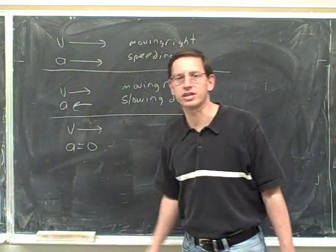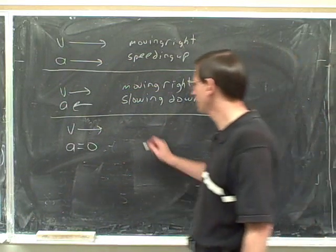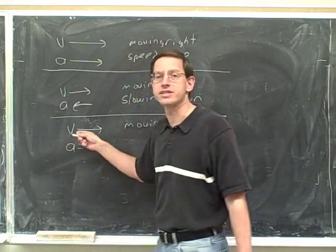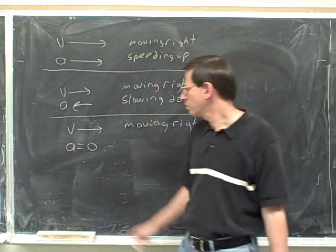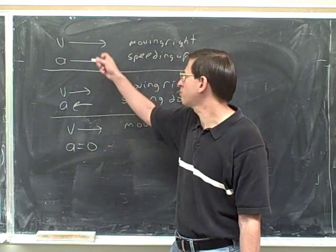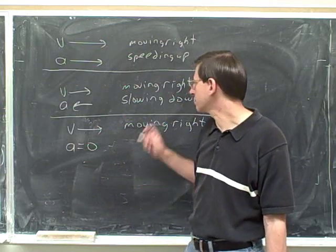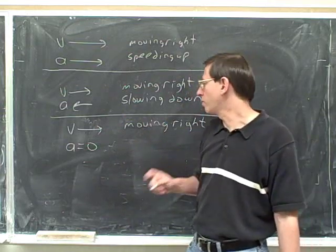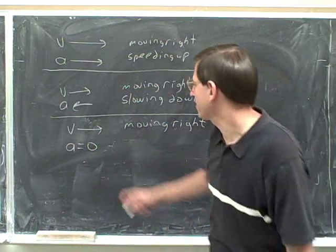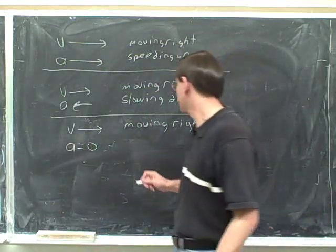Write down what you know about this object. It's moving right. The velocity tells us which way we're moving. What does it mean if the acceleration is zero? Well, we know that if the acceleration is parallel to the velocity, we're speeding up. And if the acceleration is anti-parallel to the velocity, we're slowing down. Then what's left for when the acceleration is zero? That must mean we're neither speeding up nor slowing down — we're moving at constant speed.